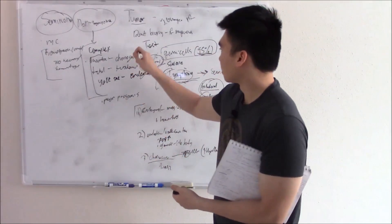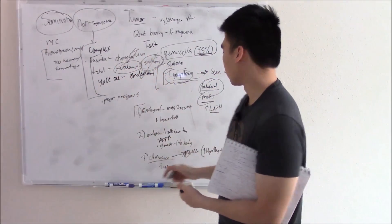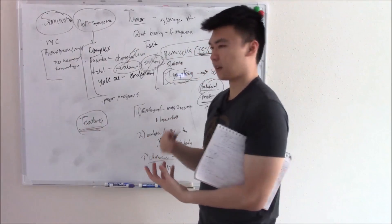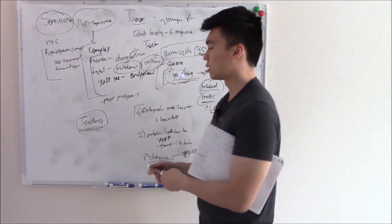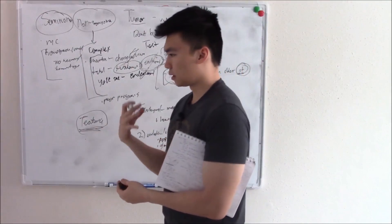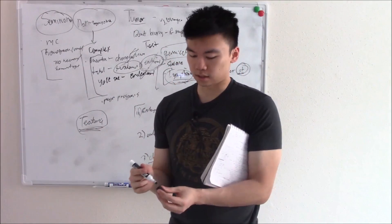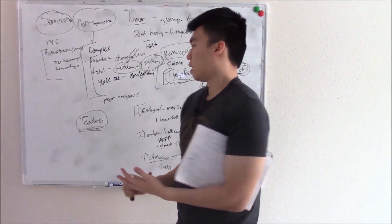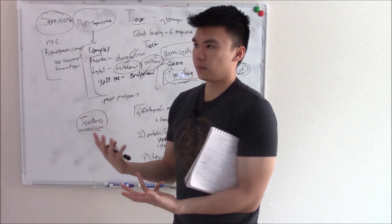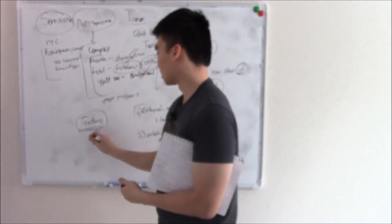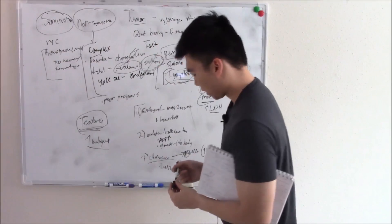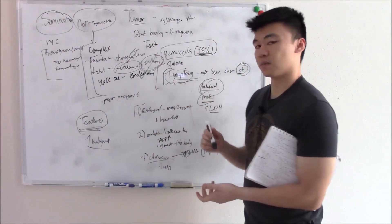And then last but not least, so that's choriocarcinoma, last but not least, we have teratomas. So teratomas are the cool ones with different types of cell types. So you can have teeth and hair and all these cool things. So those are your teratomas. In females, very common. It's the most common benign tumor. We just call it dermoid cyst. And most likely benign, we just take them out. But in males, they're more likely to be malignant. I think that's all I want to talk about for testicular pathology.